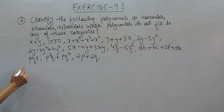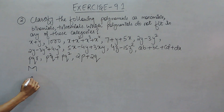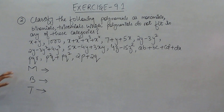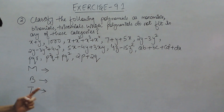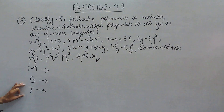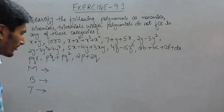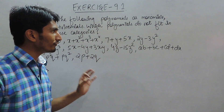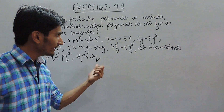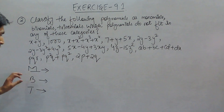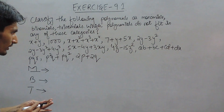We know what is a monomial, what is a binomial, and what is a trinomial. Monomial is an expression having only one term. Binomial is an expression having two terms, and trinomial is an expression having three terms. To find how many terms an expression has, first we have to find the number of signs in that particular expression. If we find the number of signs, we can easily find the number of terms.